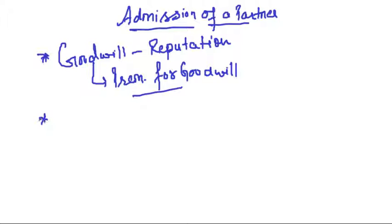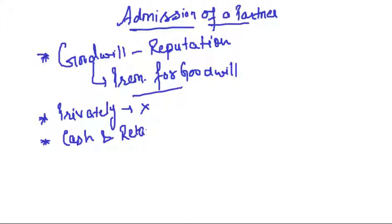We discussed about the various ways in which this premium for goodwill is paid. One is privately — in case the premium for goodwill is paid privately, no record is to be done in the books. Second is the premium for goodwill paid in cash and retained in business. We receive the premium for goodwill in cash and then that premium will be adjusted through the partners' capital accounts. As per AS 26, goodwill is not to appear in the books — it is to be adjusted through the partners' capital accounts.